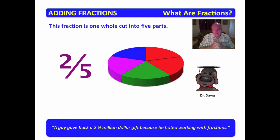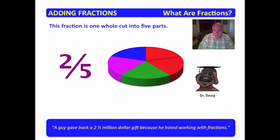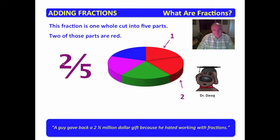Here we have the fraction two-fifths, or two over five. The five on the bottom tells us how many parts the whole is cut into — it's cut into five equal parts. That's what the bottom number of a fraction tells us. The top number tells us how many we have. Two of those parts are red — one, two. So the fraction two-fifths: the bottom number says the whole is cut into five equal parts, and the top number tells us how many we have. We have two of them.